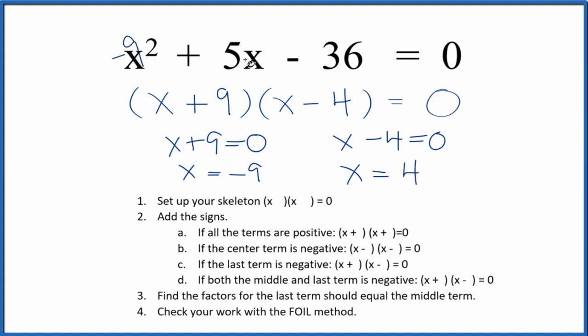If you put negative 9 in for x and you did the math, this would all equal 0. Likewise, if you put 4 in for x, you do the math, all of this equals 0. So we did this correctly.